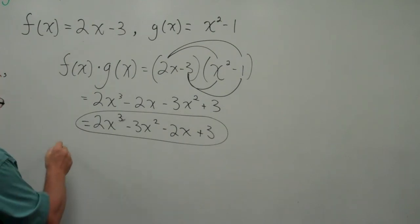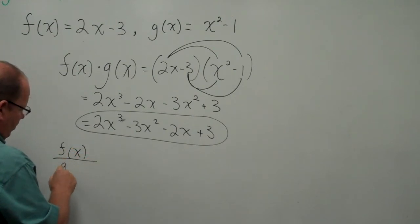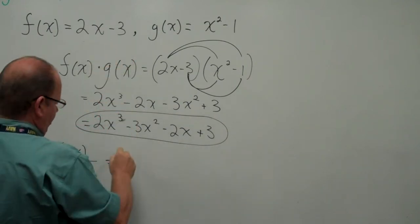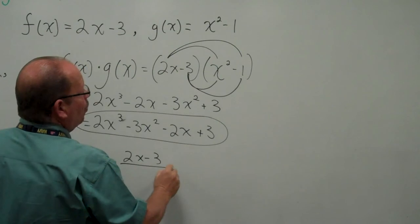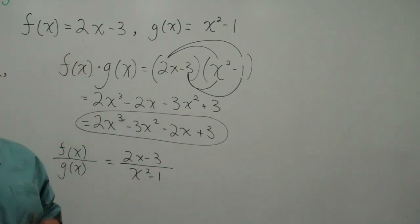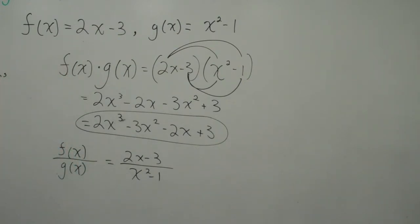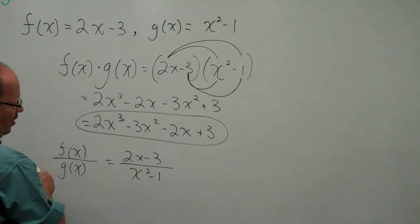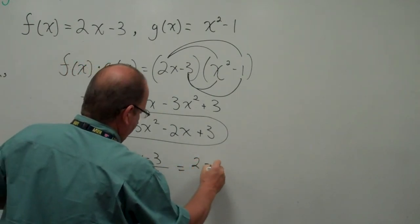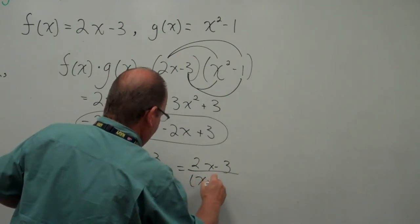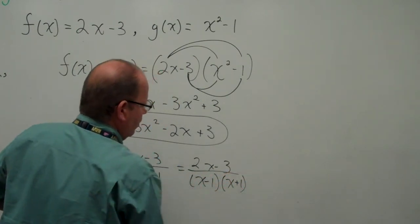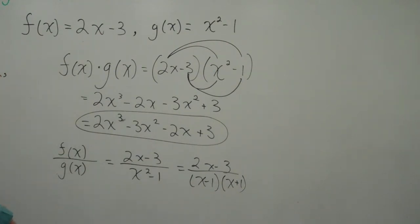Likewise, f(x) divided by g(x) would be (2x - 3)/(x² - 1). So from this point, the last thing to do, and of course if we could simplify this we would simplify this, but even if we factor the denominator, (2x - 3)/[(x - 1)(x + 1)], nothing will simplify there. Okay, again, pause, fast forward, rewind, have a good look at it.